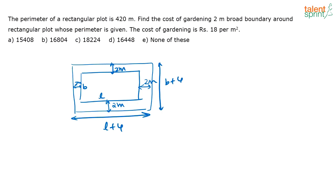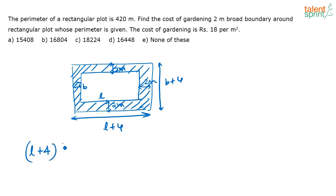Now we need to find the area of the shaded region — the boundary strip. The shaded region is nothing but the area of the outer rectangle, that is (L+4) into (B+4), minus the area of the inner rectangle, that is L times B.